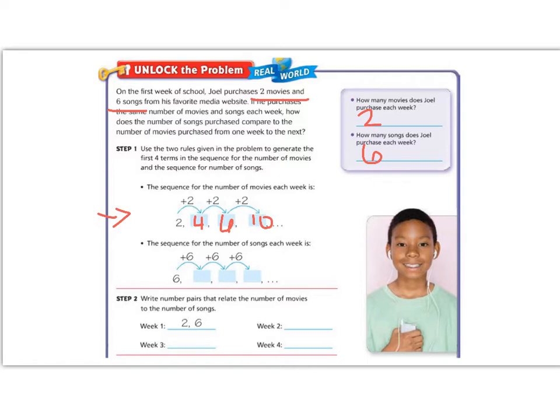Now we want to look at the sequence for the number of songs each week. So this one is increasing by six. So if he had six and he gets six more, now he has twelve. And then he gets six more, and now he has eighteen. And then he gets six more, and now he has twenty-four.